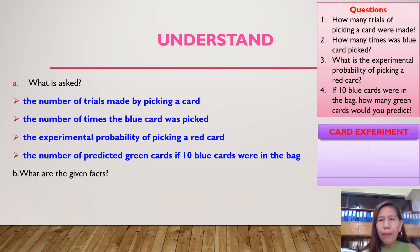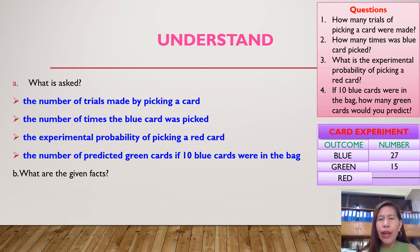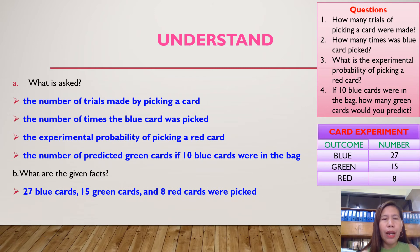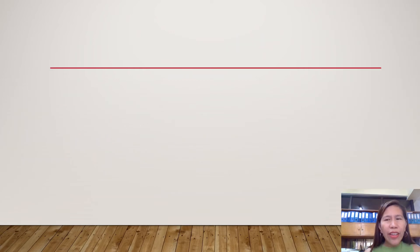In our problem for today, this is a card experiment. We have an outcome and a number. Outcome, we have blue. Number of times trial is 27. For green, this is 15. And for red, it is 8. So, what are the given facts in the problem? 27 blue cards, 15 green cards, and 8 red cards were picked. After we understand the problem, we know already what is asked, what are the given facts in the problem, then the next step is to plan.